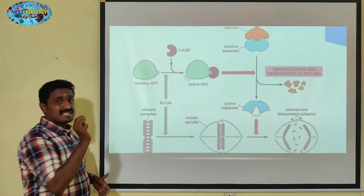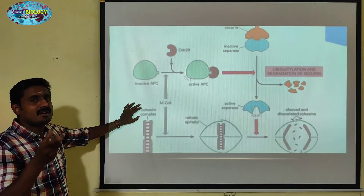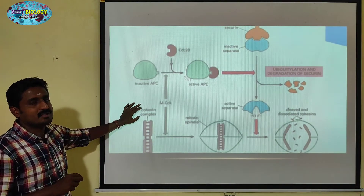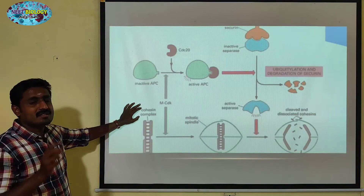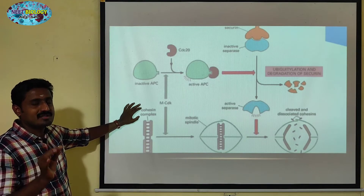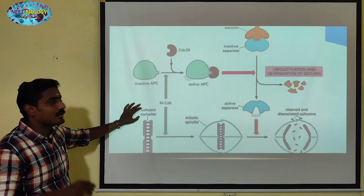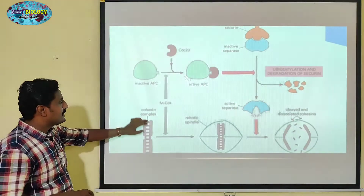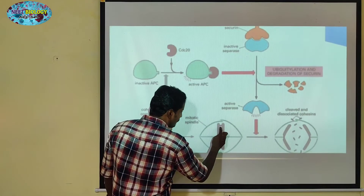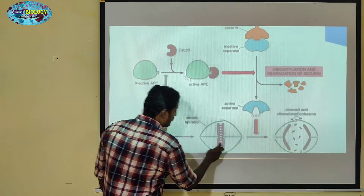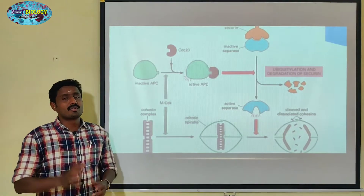The Cohesin Complex holds the chromosomes together. Cohesin is a protein responsible for the cohesion of what is at the centromere. The chromosomes are attached to one another due to cohesin proteins.